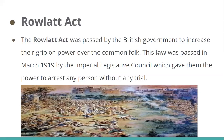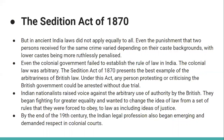This picture shows troops firing on the people during the Jallianwala Bagh massacre. In ancient India, the law did not apply equally to all — even the punishment two persons received for the same crime varied depending on their caste backgrounds, with lower castes being more brutally penalized. The colonial government also failed to establish the rule of law in India. The colonial law was arbitrary. The Sedition Act of 1870 is one example of this arbitrariness — under this act, any person protesting or criticizing the British government could be arrested without due trial.